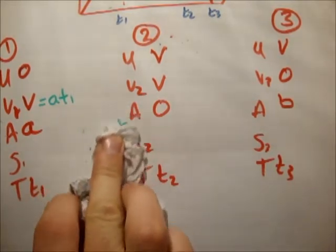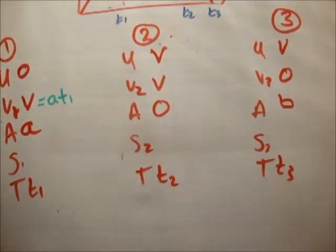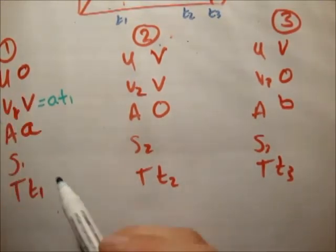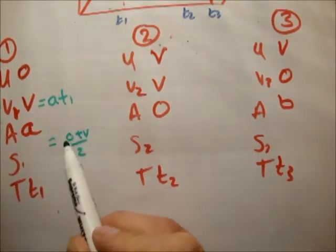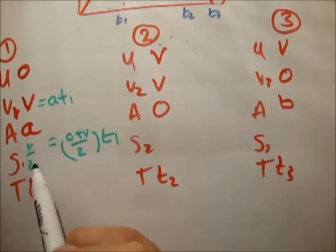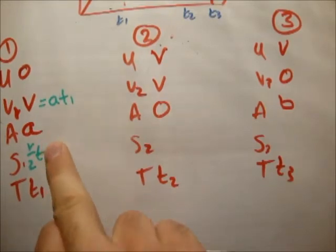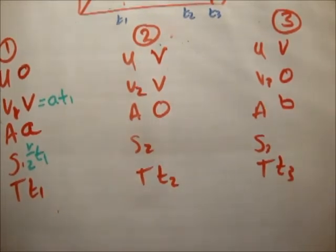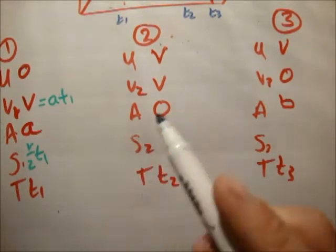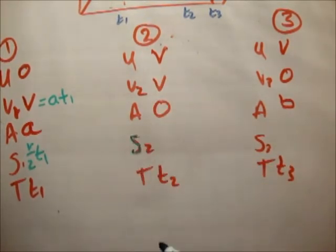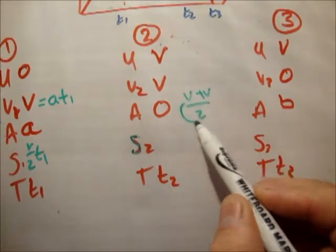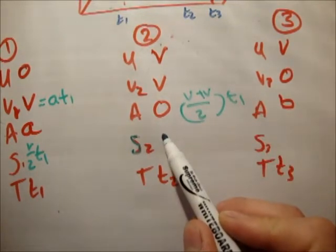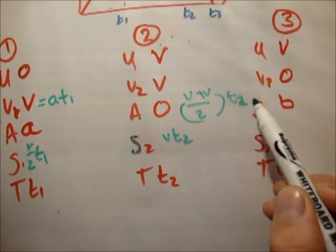We'll start with region 1. It starts at 0, accelerates to v, accelerates at a. And we want to call that time T1, T2, T3. Region 2, its initial speed is v. S2, S3, V3. Its acceleration is 0, so that stays at v. And once again this is v because that's the initial speed at region 3, drops to 0, and decelerates at a b.